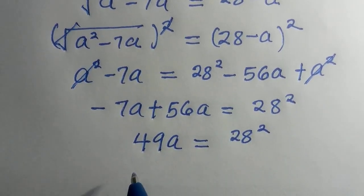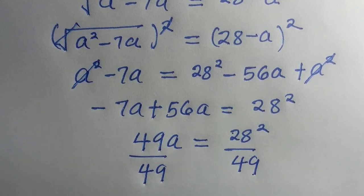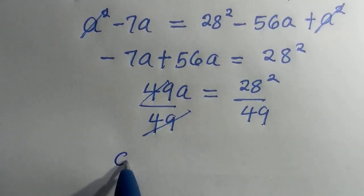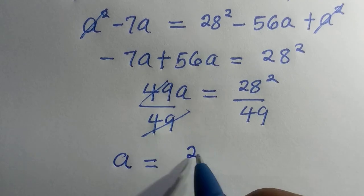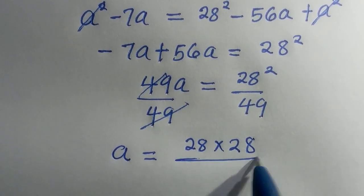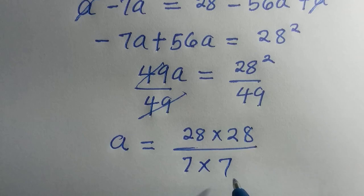By dividing both sides by 49, here we have 49, then 49 cancels 49, we are left with a, which is what we need. So 28² can be written as 28 × 28, divided by, and 49 can be written as 7 × 7.